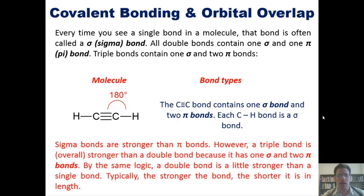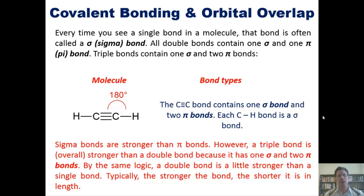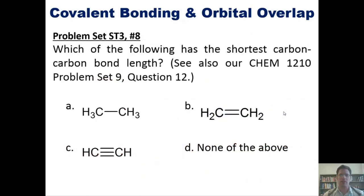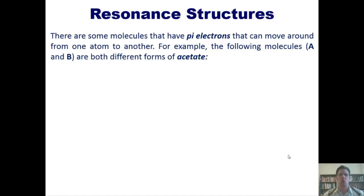Sigma bonds are stronger than pi bonds. However, a triple bond is overall stronger than a double bond because it has one sigma and two pi bonds. By the same logic, a double bond is stronger than a single bond. Typically, the stronger the bond, the shorter its length. Here's a question: which of the following has the shortest carbon-carbon bond length? Based on what I just taught you, you should be able to determine it on your own.